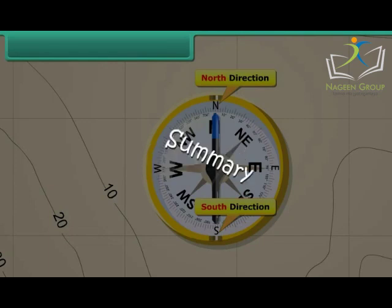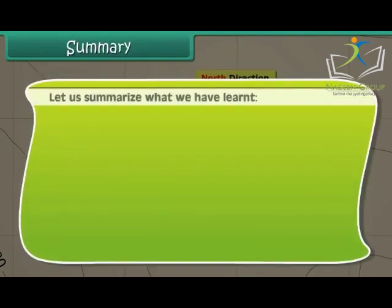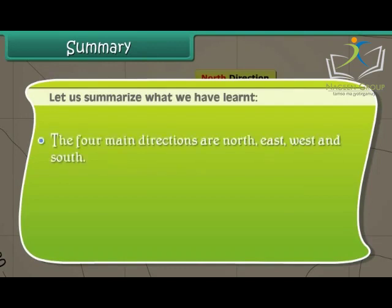Summary. Let us summarize what we have learned. The four main directions are North, East, West and South. Compass is used to find directions.